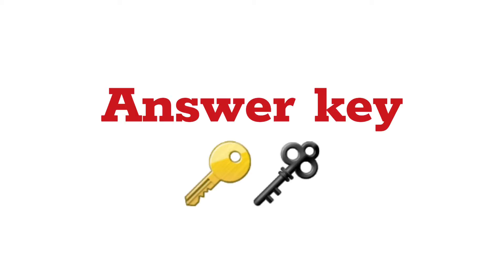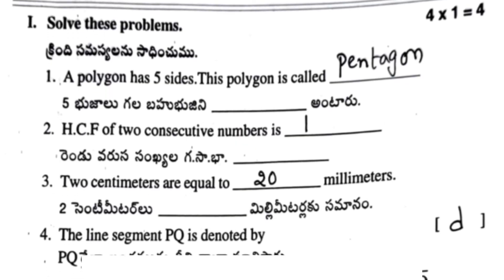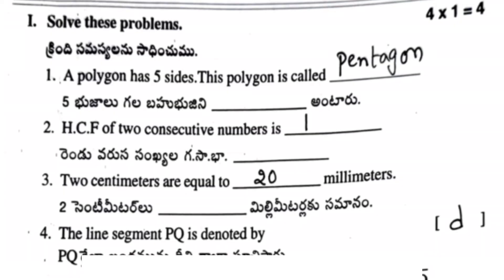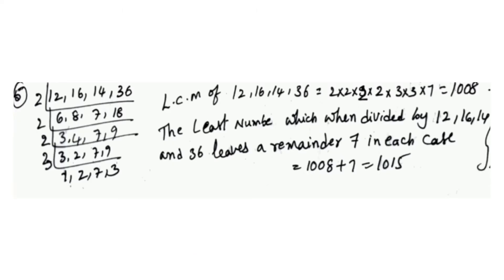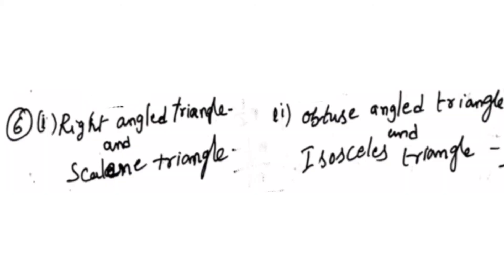These are the first roman numeral section answers — the first four answers. Pentagon, 120, and then D. Next, the fifth one: we have to find the LCM of the given numbers. This is the second answer for the sixth question.